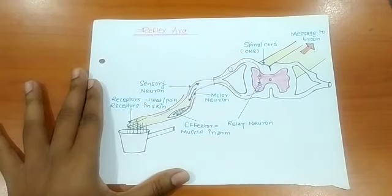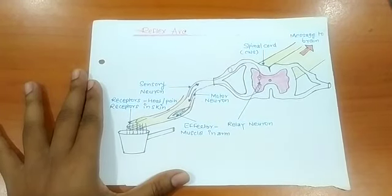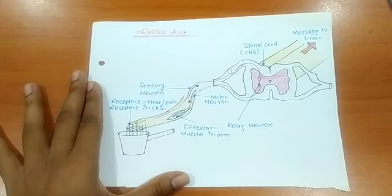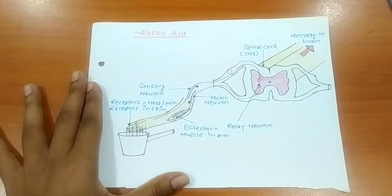Hello students, in this video we are going to learn about labeling the diagram of reflex arc, which is from the textbook of class 10th, chapter 7, control and coordination.